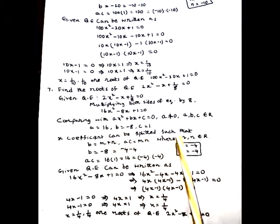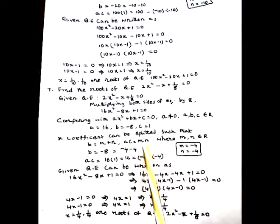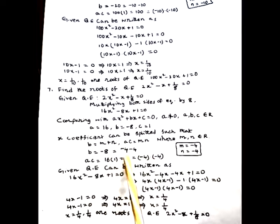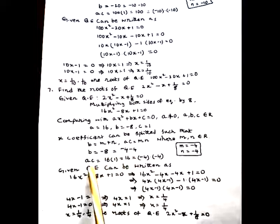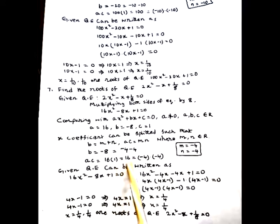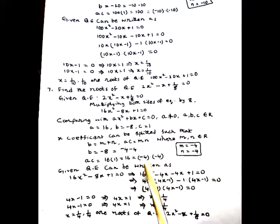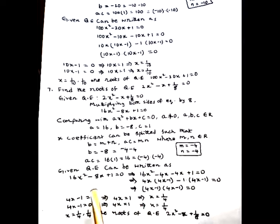The x coefficient b can be split such that b = m + n and product ac = mn. Minus 8 can be written as (-4) + (-4) = -8, and the product ac = 16 × 1 = 16 = (-4) × (-4). So m = -4 and n = -4. The given equation is rewritten as 16x² - 8x + 1 = 0.